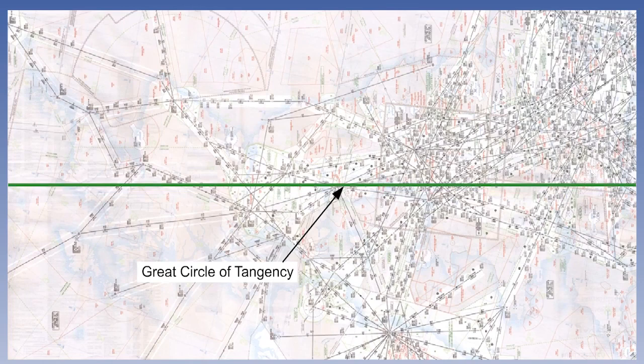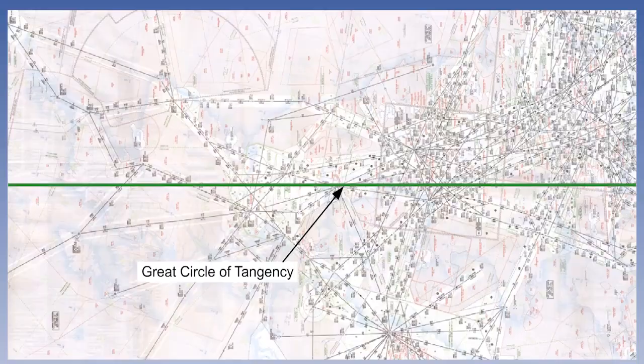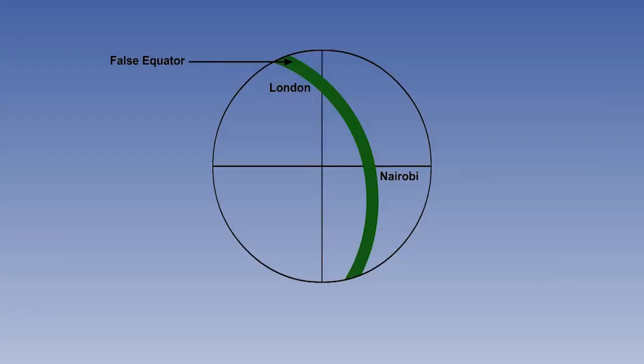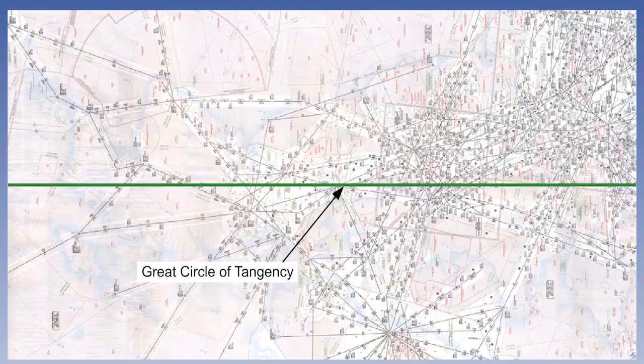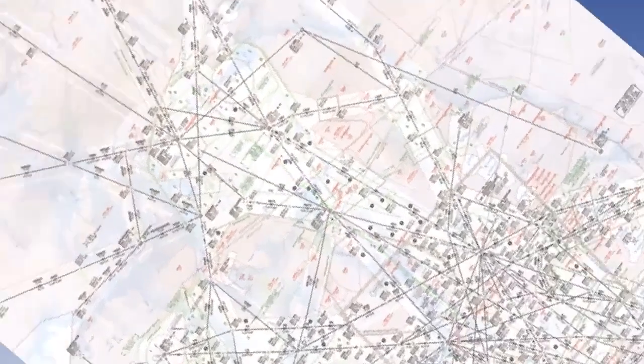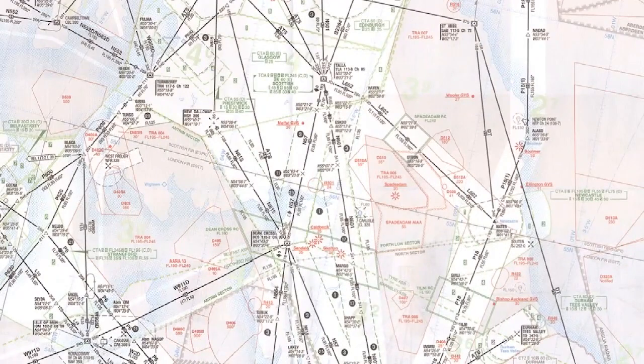Jeppesen still use mainly Lambert projections, but nearly all ARAD enroute charts are now oblique Mercators. The main use of the oblique Mercator chart is for flying specific great circle routes. However, it also makes a very good general purpose enroute chart, plotting chart or radio nav chart.